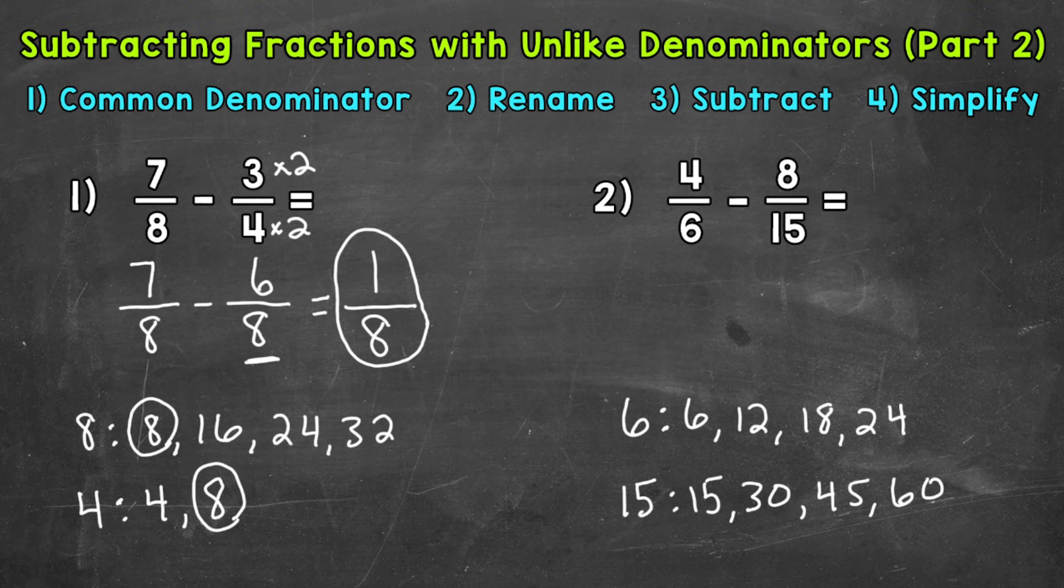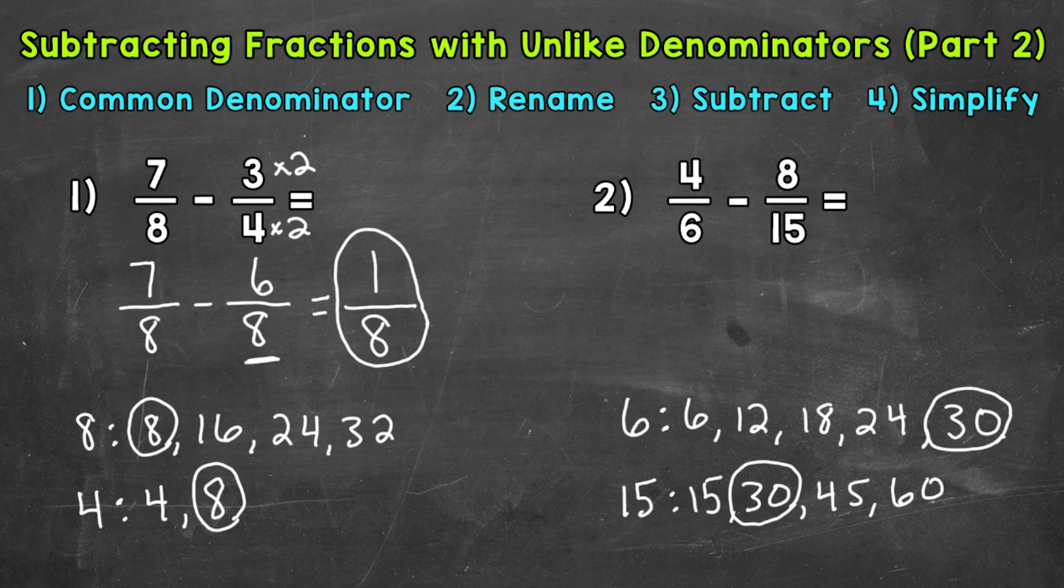So what we can do, we can extend our lists. Now the multiples for 15, we're already at 60. The multiples for 6, we're only at 24. So let's extend that list. So the next multiple is going to be 30. And that's going to give us a common multiple, specifically the least common multiple. So 30 is going to be our common denominator.